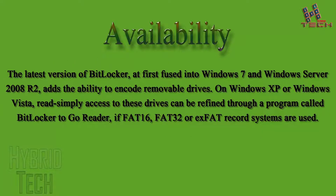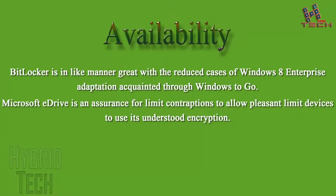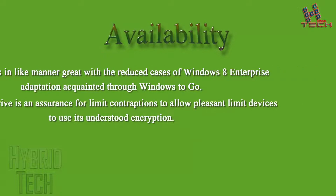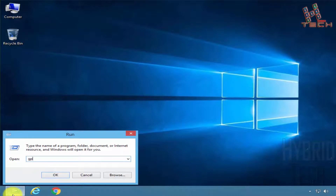The latest version of BitLocker, first included in Windows 7 and Windows Server 2008 R2, adds the ability to encrypt removable drives. On Windows XP or Windows Vista, read-only access to these drives can be achieved through a program called BitLocker To Go Reader, if FAT16, FAT32, or exFAT file systems are used. BitLocker is also compatible with the reduced editions of Windows 8 Enterprise acquired through Windows To Go.